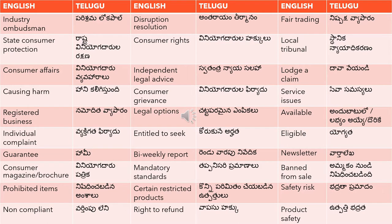The first word is 'industry ombudsman' — that is 'parisrama lokpal'. Next, 'disruption resolution' — 'antarayam tirmanam'. Then 'fair trading' — 'nishpaksha vyaparam'. 'Nishpaksha' means fair and 'vyaparam' means trading, so fair trading is 'nishpaksha vyaparam'.